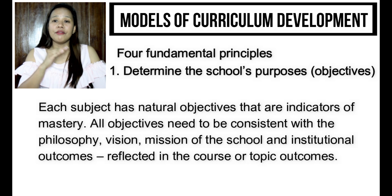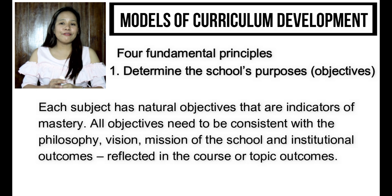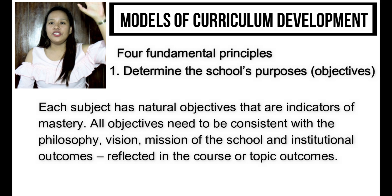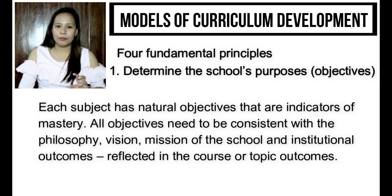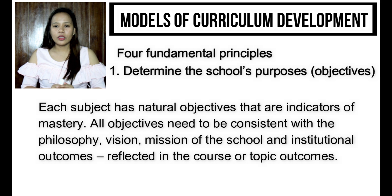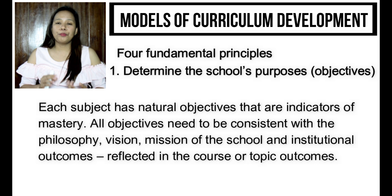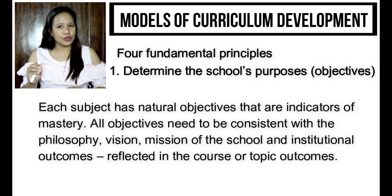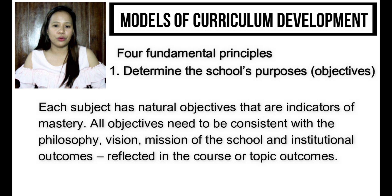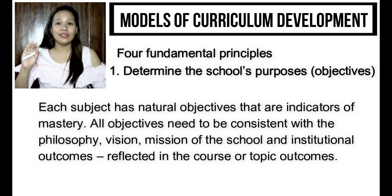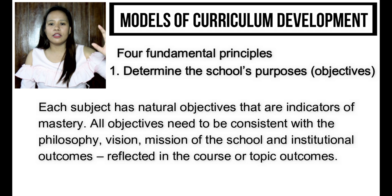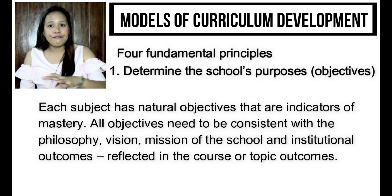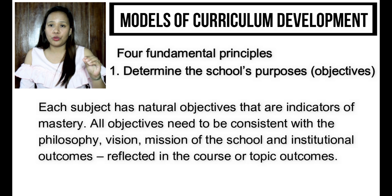The institutional outcomes should be reflected in the course and topic outcomes. We start with institutional outcomes, then create course outcomes, and from those we create topic learning outcomes. For example, one of our university's institutional outcomes is to produce graduates who are critical thinkers. So teachers, regardless of subject, should make sure to develop students' critical and creative thinking skills to fulfill that outcome.